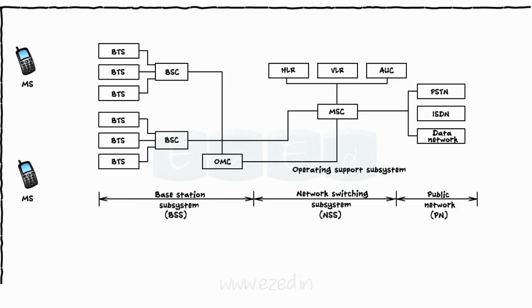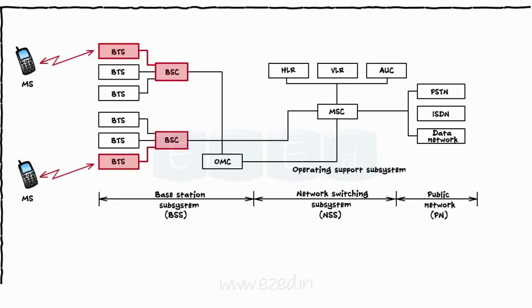Base Station Subsystem: BSS gets connected to MS via radio interface. It has two different blocks: BTS and BSC. Practically, every MS gets connected to the BTS of that area. This BTS sends the signal to BSC, and many BTS are connected to one BSC. At the end, BSC is connected to MSC. Hence, the BSS system consists of BTS and BSC.